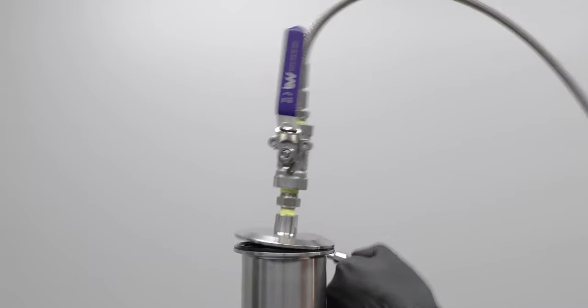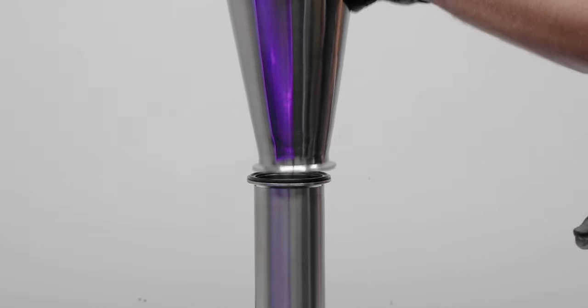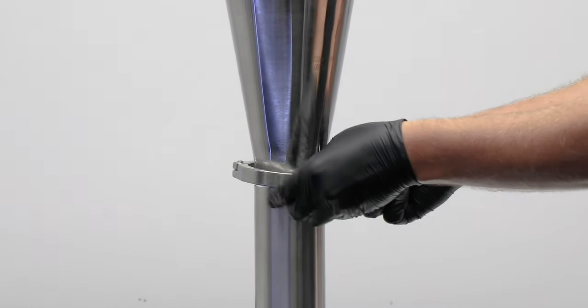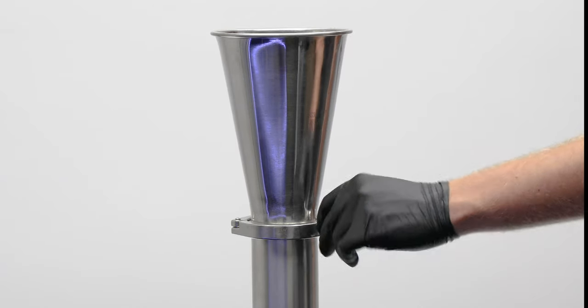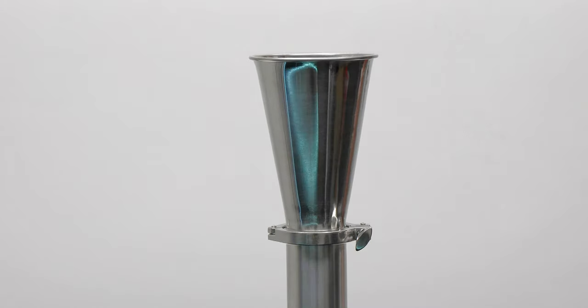Take off the top cap after doing a pressure test on the system. Pack material using a hopper like shown here. Add one pound of material into the column and press down with the packing rod.